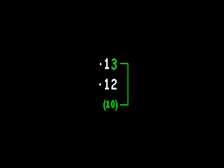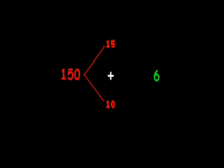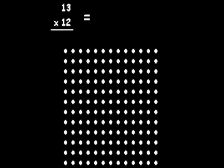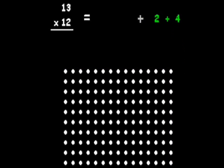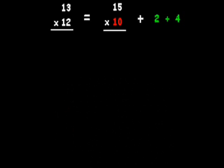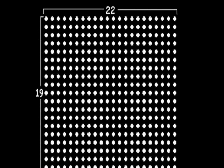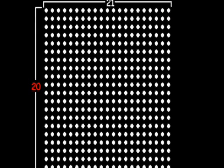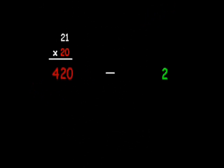We have seen that thirteen times twelve is six more than one hundred fifty, but the reason that works is thirteen times twelve is both two and four more than one hundred fifty. If you have an area of twenty-two times nineteen, and you put this column back where it came from, you can see that you are just two shy of what would have been the area of twenty-one times twenty. So to solve for twenty-two times nineteen, these are the two that you subtract from twenty-one times twenty.